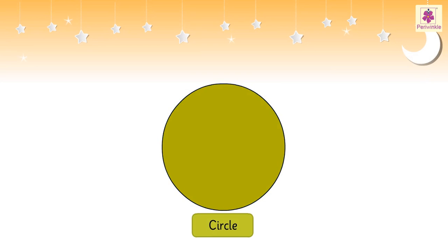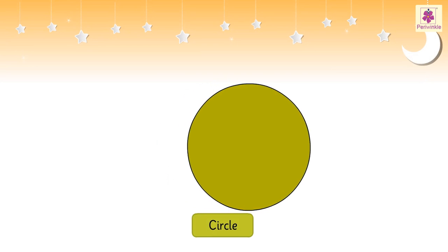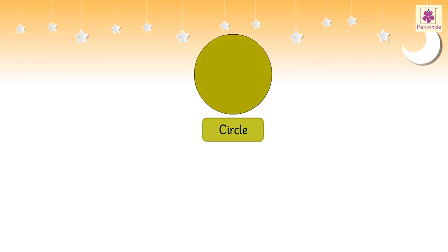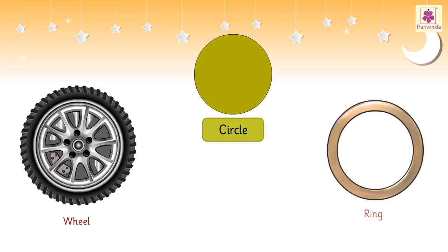This is a circle. A circle is always round. It does not have any sides. Examples of a circle are a wheel and a ring.